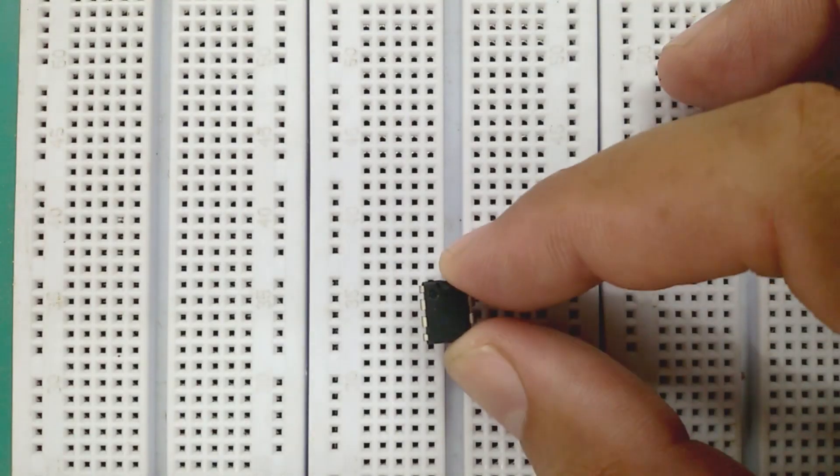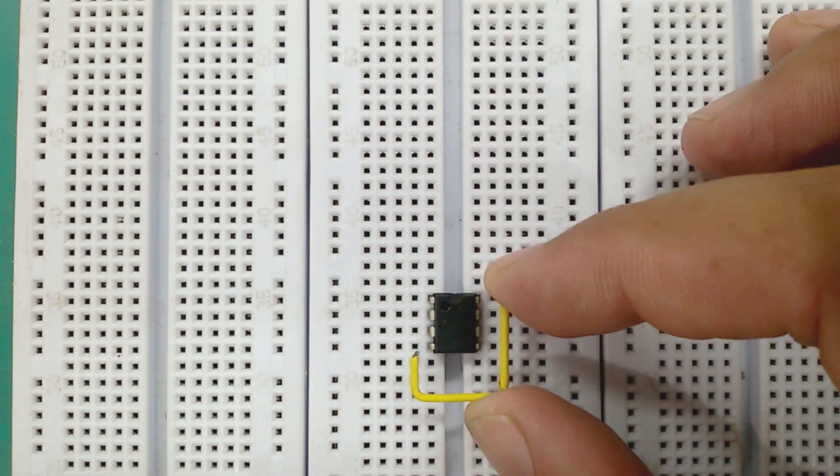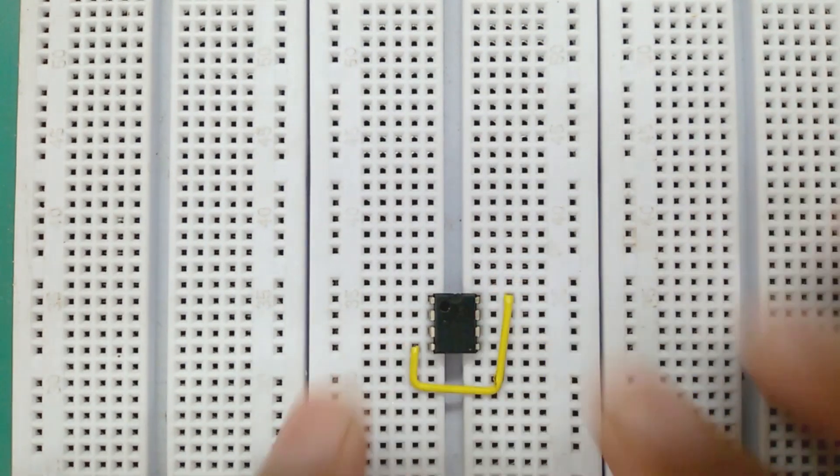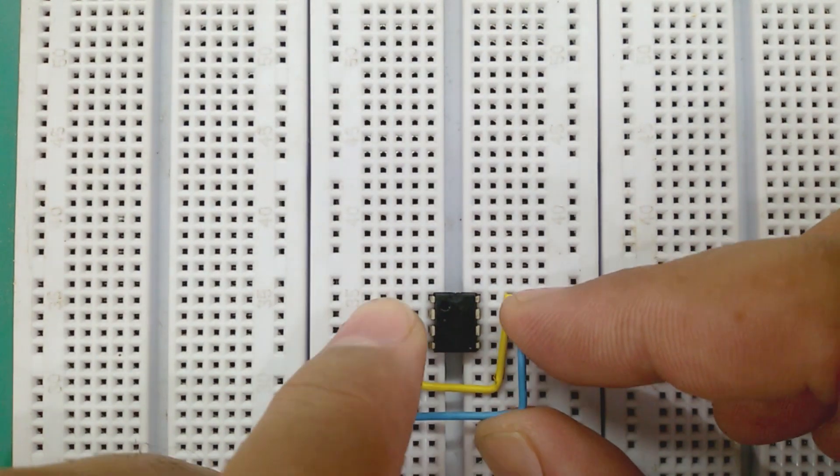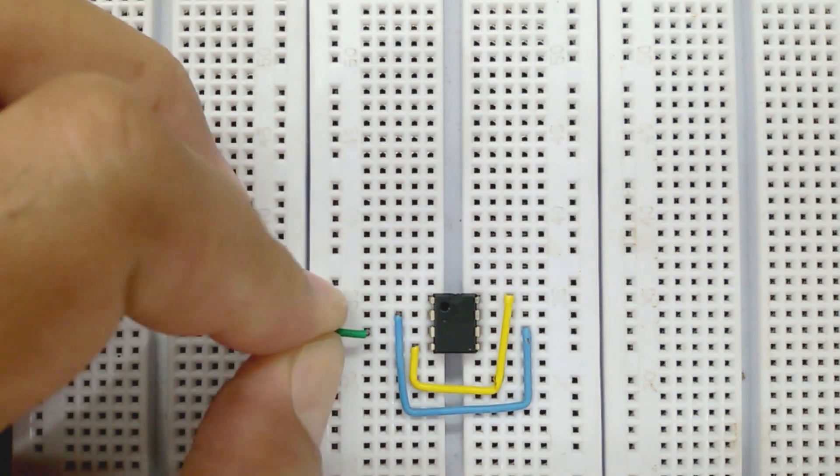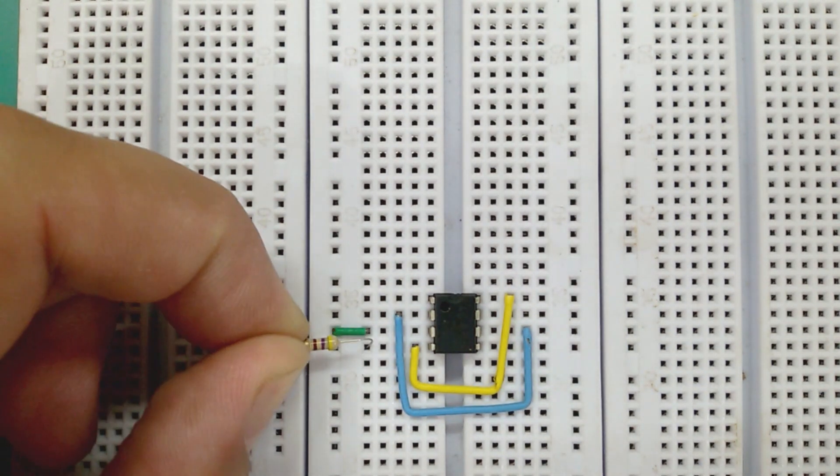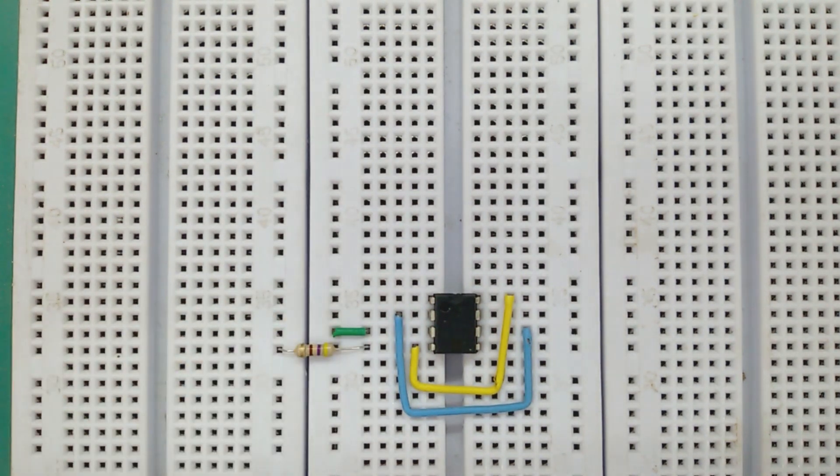Now let's make the circuit. Insert 555 timer IC into the breadboard. Connect pin 4 with pin 8 and pin 2 with pin 6 using jumper wires. Connect pin 3 with the positive pins of LEDs. Connect pin 4 and pin 1 with the negative pins of LEDs using 470 ohms resistors.